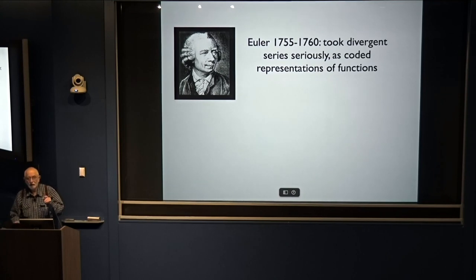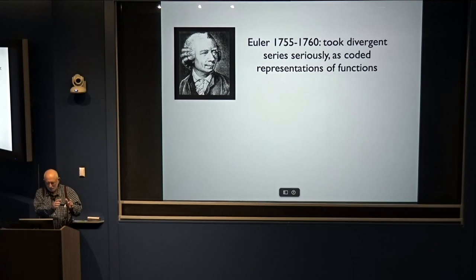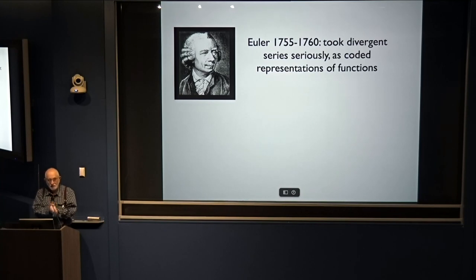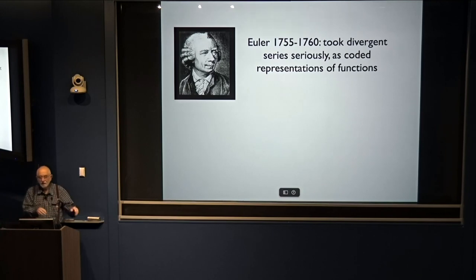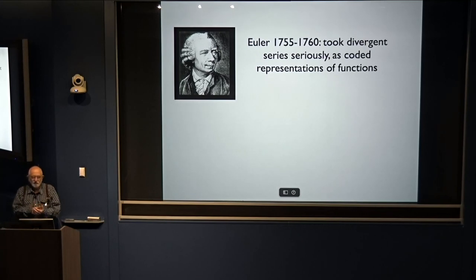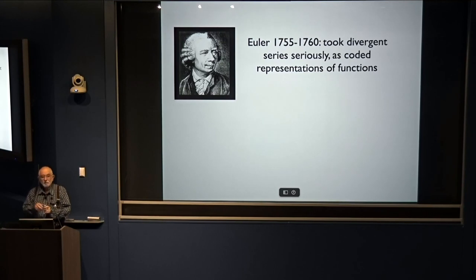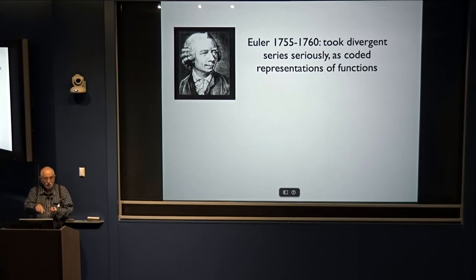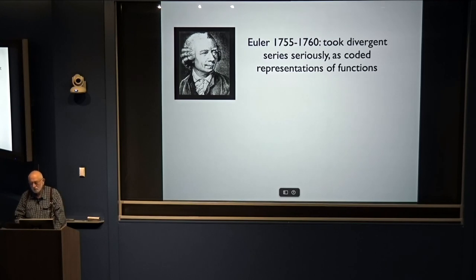In between Bayes' observation and bewilderment and its publication, Euler wrote much more deeply and extensively about divergent series. He took them seriously — he wasn't disturbed at all. He said they are coded representations of functions, and in some favorable cases you can decode them using various interpretation schemes for series — not these factorially divergent ones, but other ones. Very deep, beautiful work.